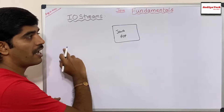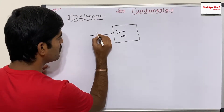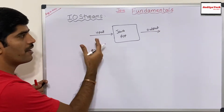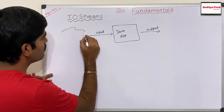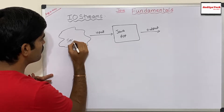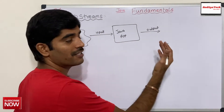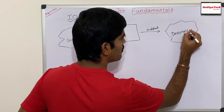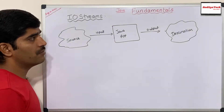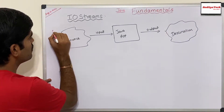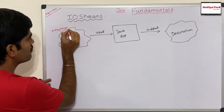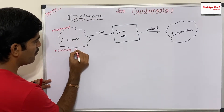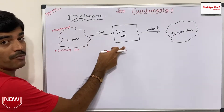For the Java application I'm going to give some input, and I am seeing the output. The way we can give input is nothing but a source, and the way I am seeing the output is nothing but a destination. There are multiple ways we can provide input to the Java application — one way is using the keyboard from the user, and the other way is with the help of an existing file.